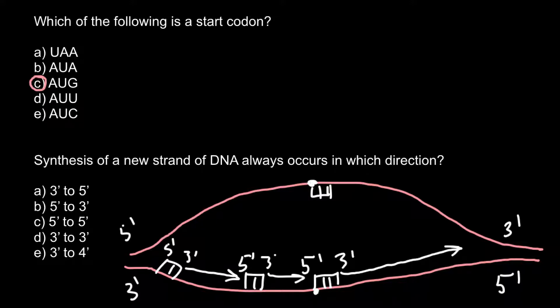So the same direction as here, but here it happens continuously. And here it would be organized in Okazaki fragments. So on the overall growth would be in this direction.